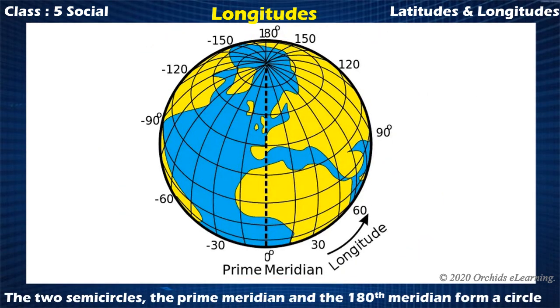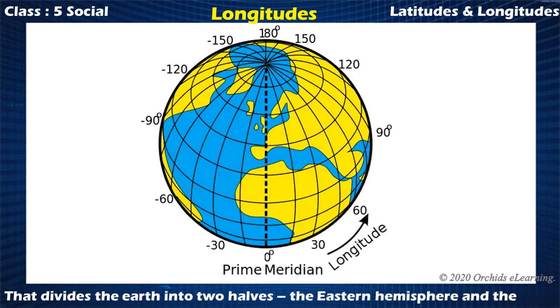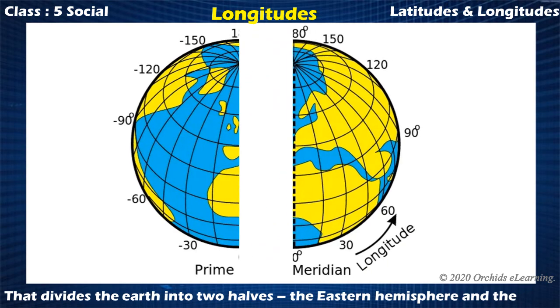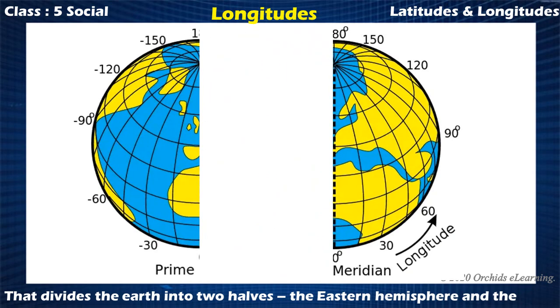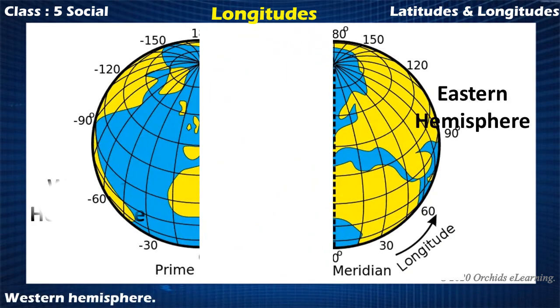The two semi-circles — the prime meridian and the 180th meridian — form a circle that divides the earth into two halves: the eastern hemisphere and the western hemisphere.